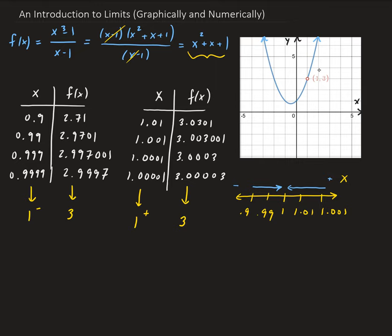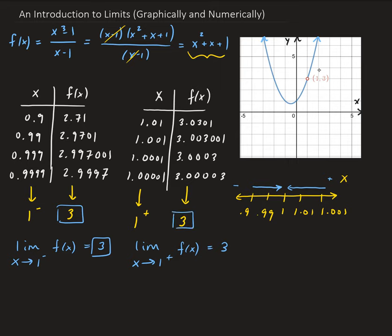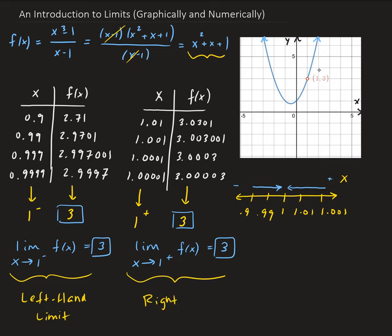Mathematically, this is the idea of the limit. From the first table, we can rewrite this using limit notation: the limit as x approaches 1 from the left of our function is equal to 3. And for the limit as x approaches 1 from the right of our function, that's also approaching 3. We call this the left-hand limit because x is approaching from the left, and this is the right-hand limit since x is approaching 1 from the right side.